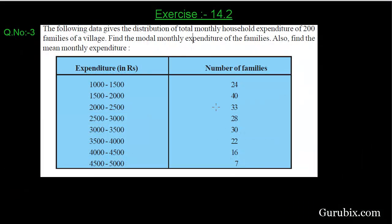Welcome friends. This is question number 3 of exercise 14.2. In this question, we have to find the mean and mode of the data given in this table. In this table, there are two columns. The first column is expenditure in rupees and the second column is number of families, which is our Fi. According to the question, the number of families is 200.